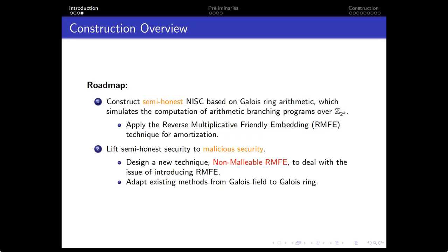Our construction consists of two steps. The first step is to construct a semi-honest NIST. Our construction is based on a Galois ring of Z_{2^p} and can simulate the computation of a semantic branching program over Z_{2^p}. To amortize the cost of using a very large ring extension, we apply a reverse-cost embedding-friendly technique. Then we lift the semi-honest security to malicious security. Since we introduced IMDB into the context of NIST, malicious adversaries can now deviate from IMDB encoding, so we designed a new technique we call nominal RnB to deal with this issue.